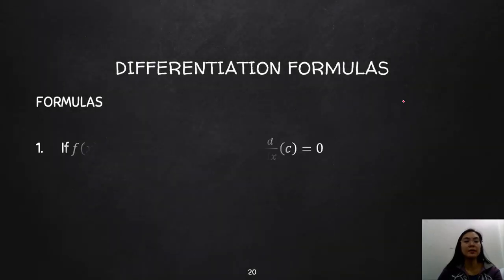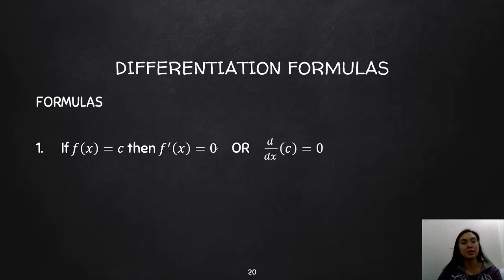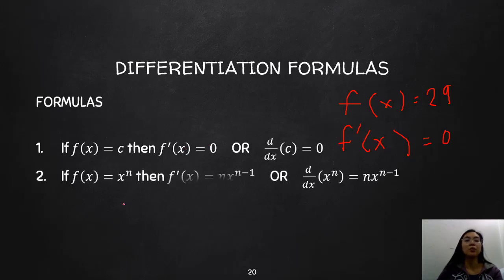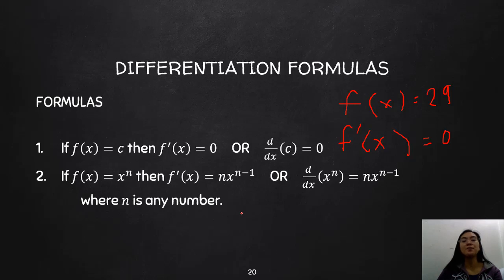For the formulas: Formula 1 — if f(x) equals a constant, then f′(x) = 0. The derivative of any constant is 0. Formula 2 — if f(x) = xⁿ, then f′(x) = n·x^(n−1), or equivalently d/dx[xⁿ] = n·x^(n−1), where n is any number.